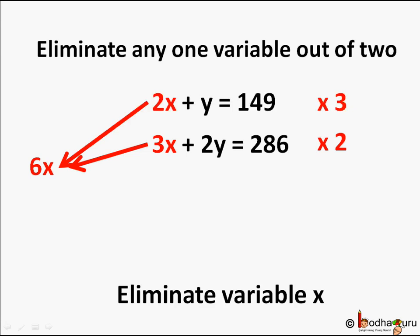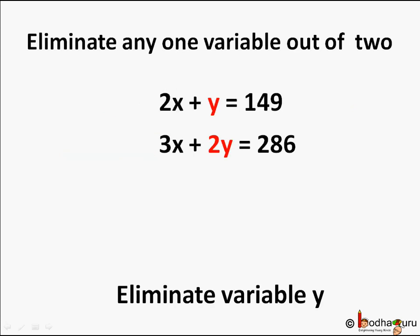Is there any other method? Look, Y and 2Y. If we multiply left hand side of the first equation by 2, its coefficient would become 2Y and then we can eliminate Y. That sounds easier because we need to do it in only one equation compared to two equations. So let's do that.